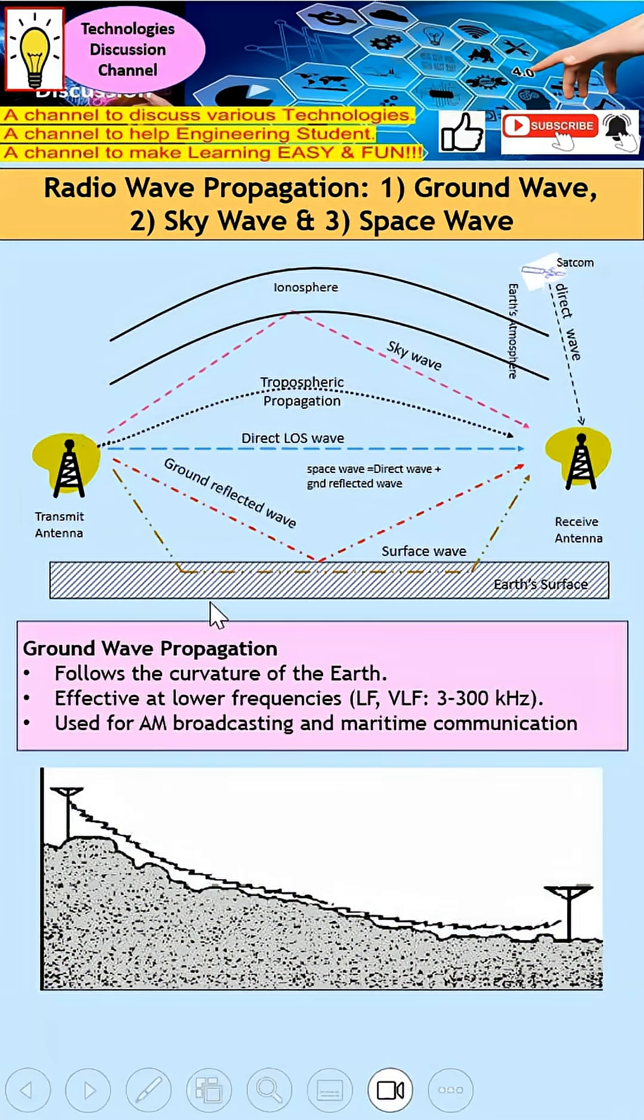Let's take a look at this diagram to understand ground wave, sky wave, and space wave. Starting with ground wave: ground waves are also known as surface waves. As you can see, they travel along the Earth's surface, which is how they get their name.